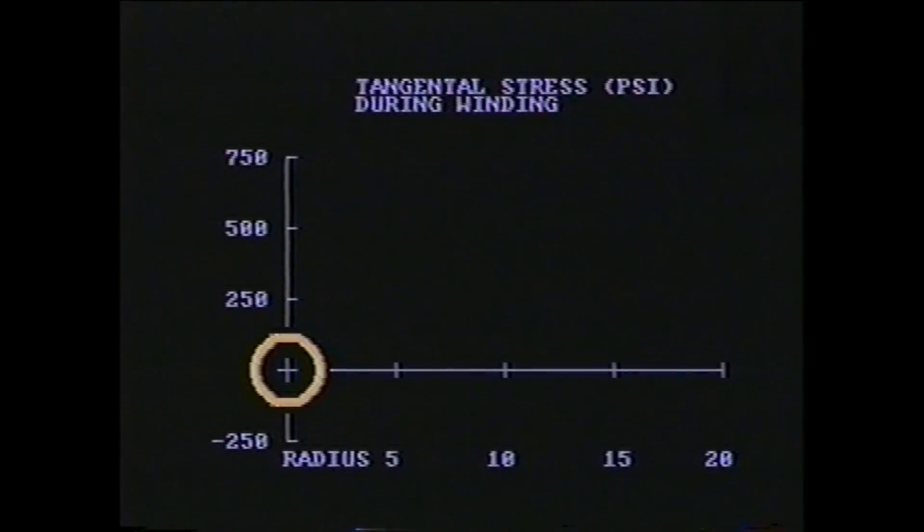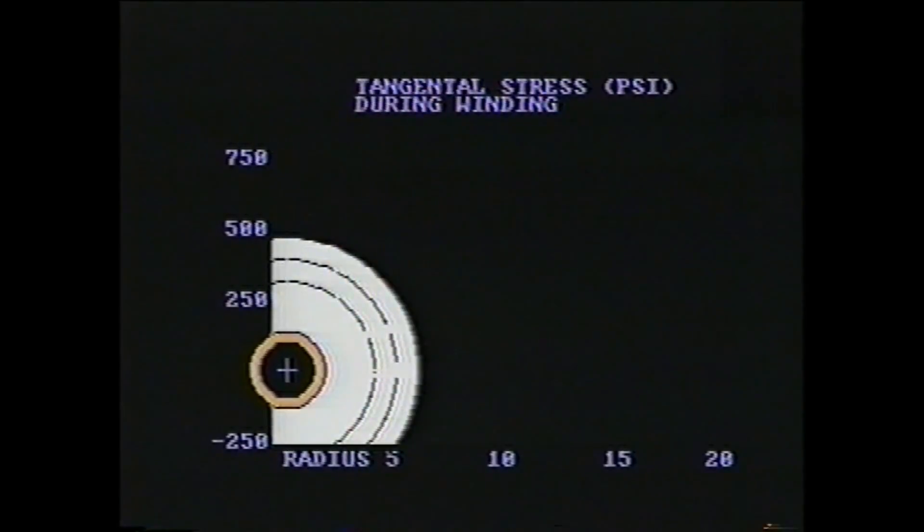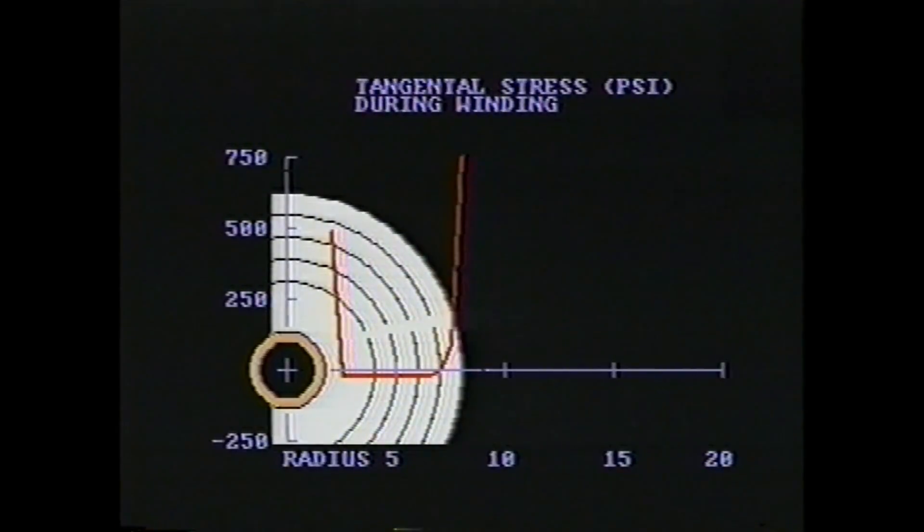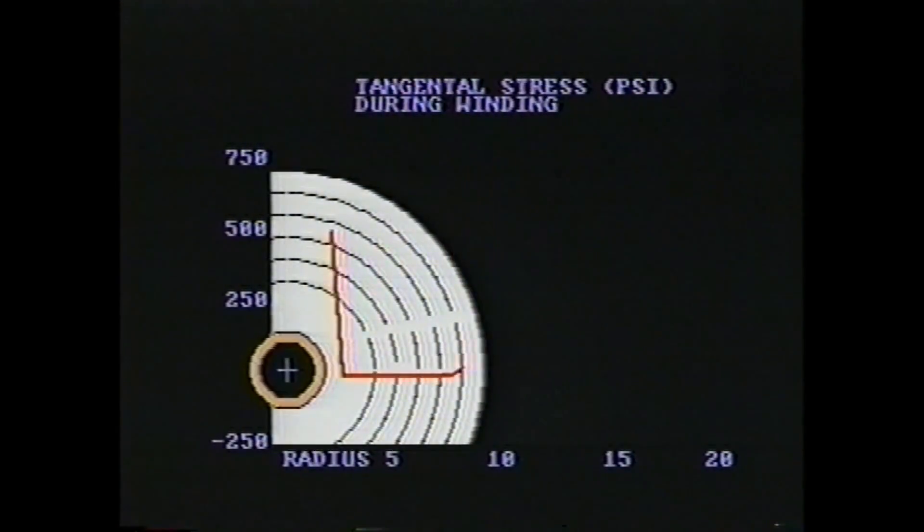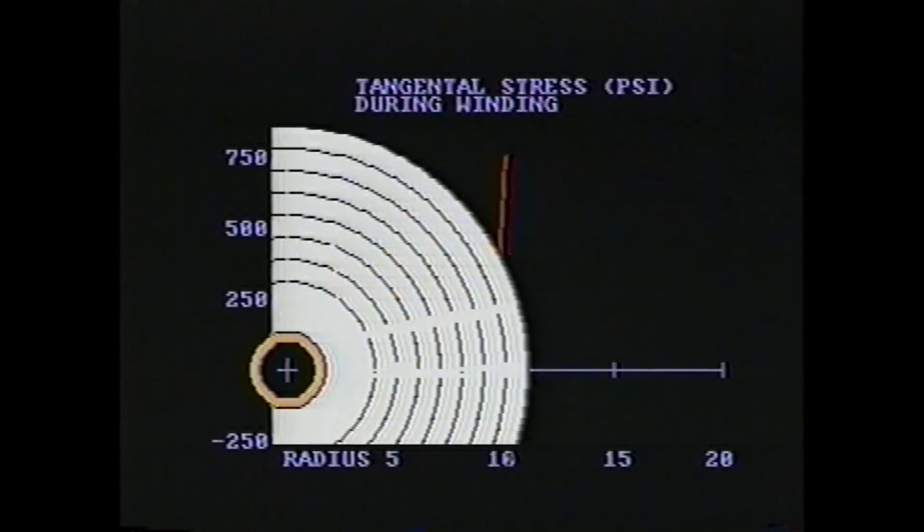Another set of stresses which define roll structure are the tangential stresses which act in the machine direction of the paper. Tangential stresses may be tensile, zero or compressive. Though a single strip of paper cannot be put into compression without buckling, paper inside a roll can be stable in MD compression if there is sufficient support from adjacent layers.